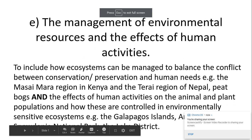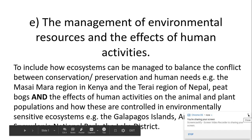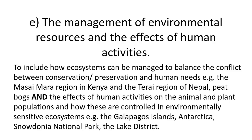Welcome biologists. We are looking at specification point E from populations and sustainability, 6.3.2 from the OCR specification for A-level biology. This is quite a lot of content so this video is going to be split into two, so this is part one. In part one we're going to be looking at the Masai Mara region in Kenya, the Tahari region in Nepal, and also peat bogs, and we'll cover the rest in the second video.